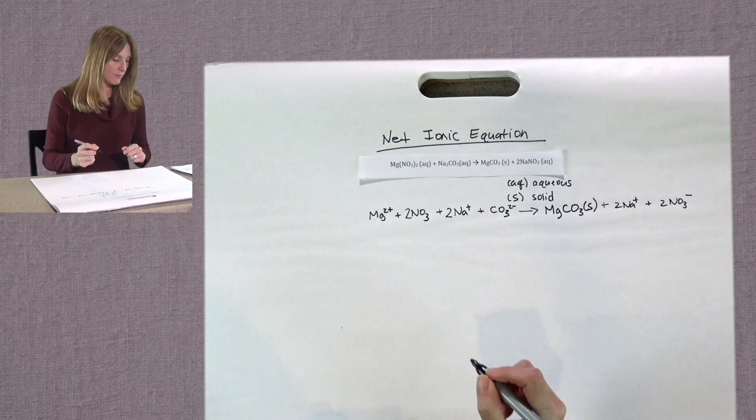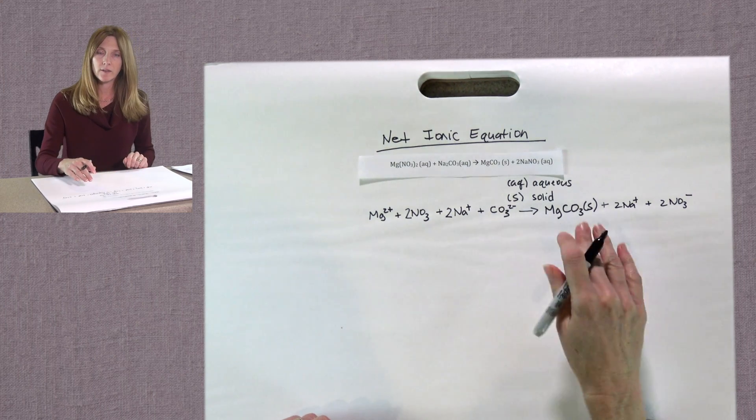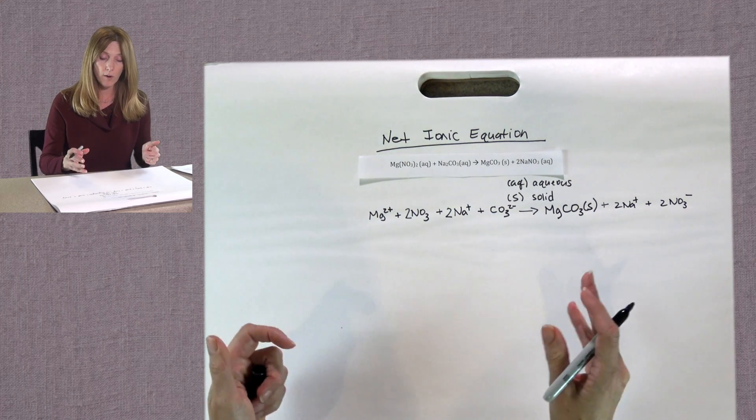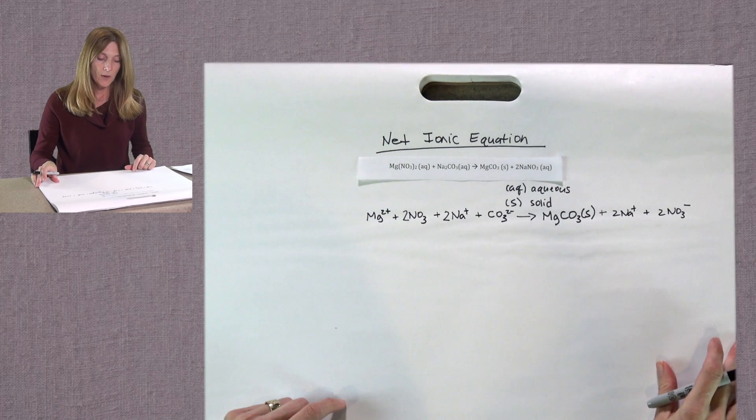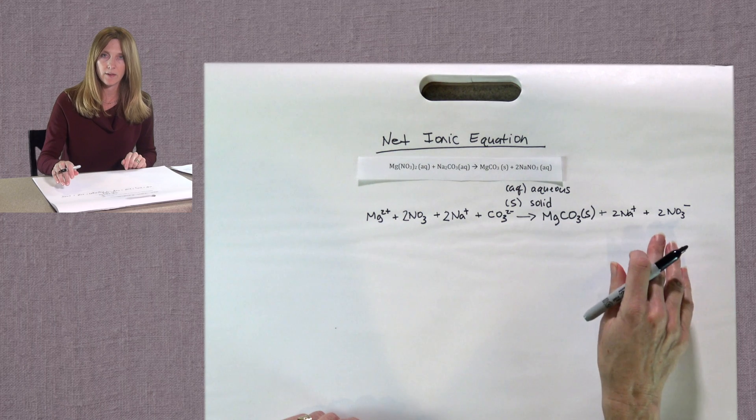Okay, so now we have this giant equation with all of the ions shown separately that will come apart in solution. This is called a total ionic equation because all of the ions are shown.